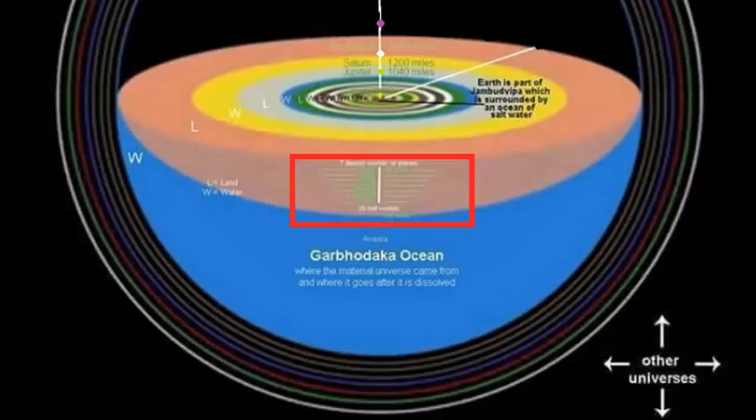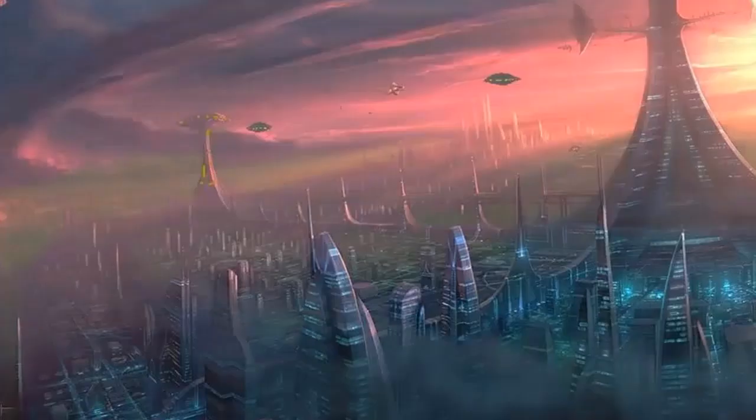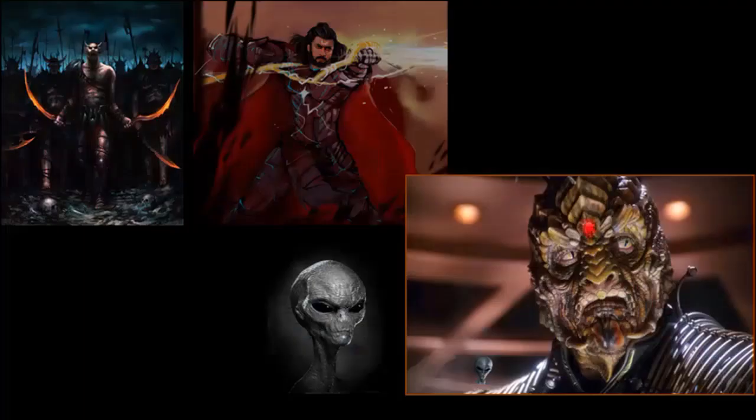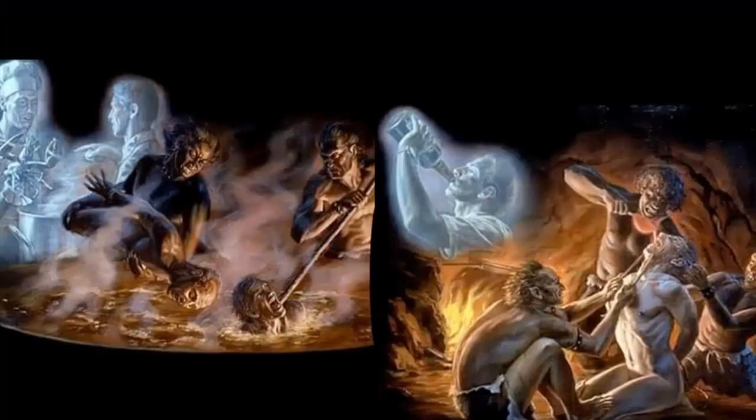Delving below Bhumandala to the lower regions, one encounters Bilvasvarga, seven subterranean worlds inhabited by Asuric beings. Below them are the hellish realms, where in the course of transmigration, a person is subject to reconditioning before entering their next body.